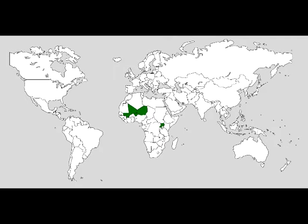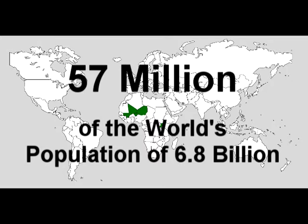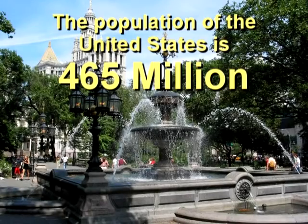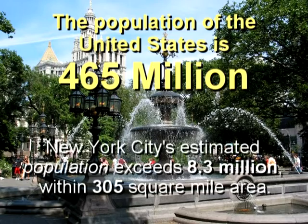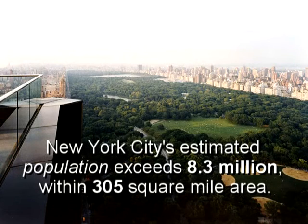The total population of Niger, Mali, and Uganda combined is 57 million people, out of a worldwide population of 6.8 billion. The United States has 465 million people, and the city of New York has a little over 8.3 million in a 305 square mile area.